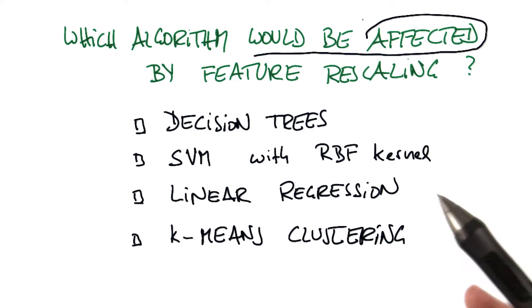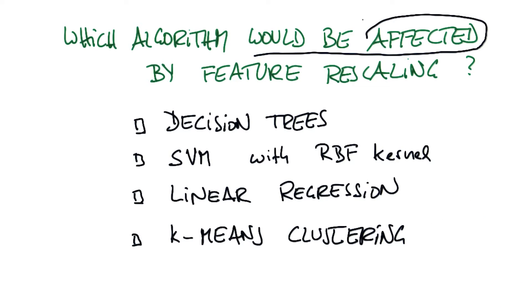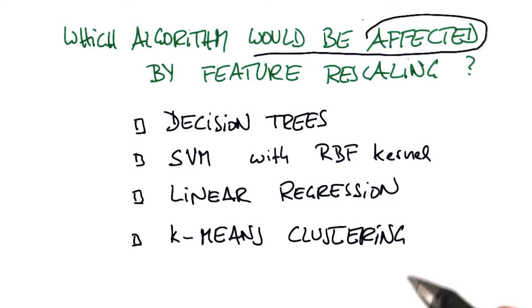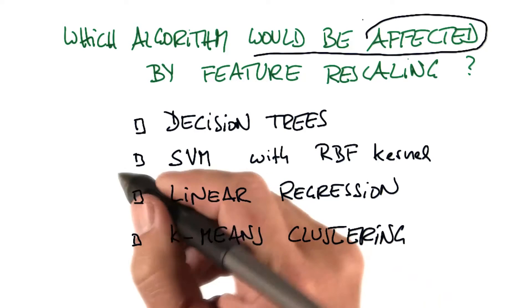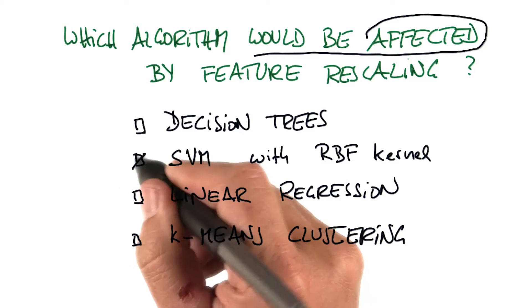So Katie, what do you think? Which ones are the right answers here? The right answer is that the ones that do need rescaled features will be the SVM and the k-means clustering.